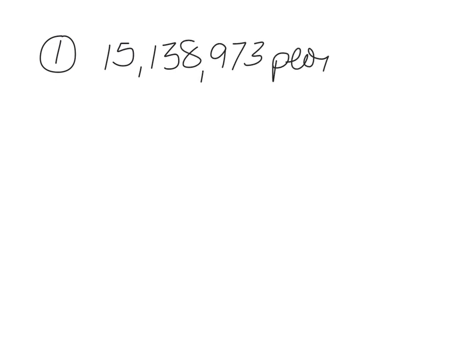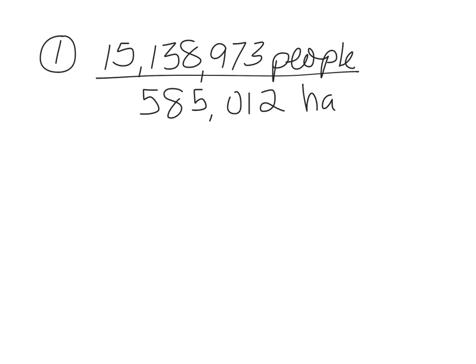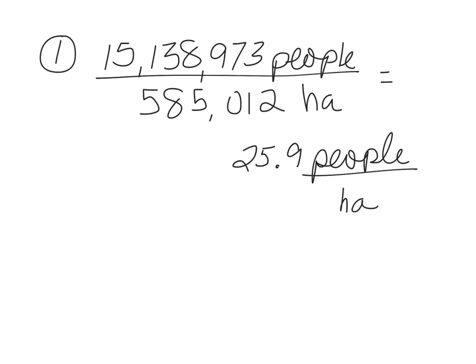Number one: what was the population density of Los Angeles in 2014 in persons per hectare? You'll set it up using the population math formula — persons over area in hectares, abbreviated as HA. Pause the video and plug that into your calculator. When you round to three significant digits, you get 25.9 people per hectare. Don't forget your units — always remember units.